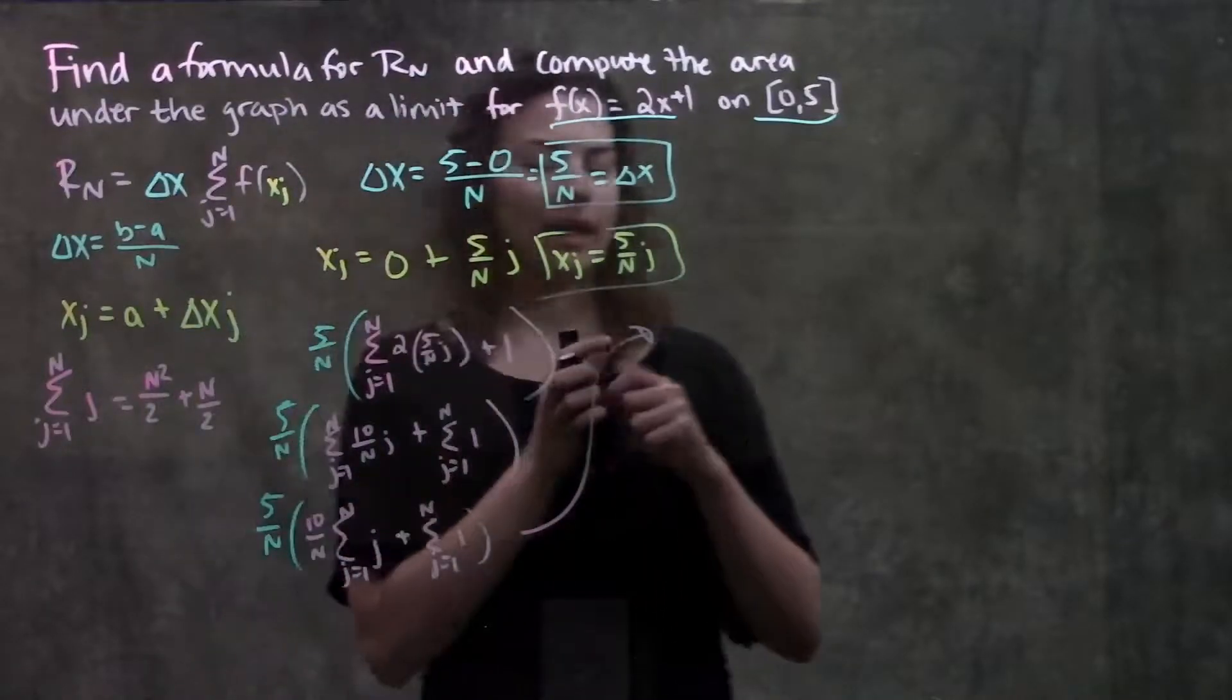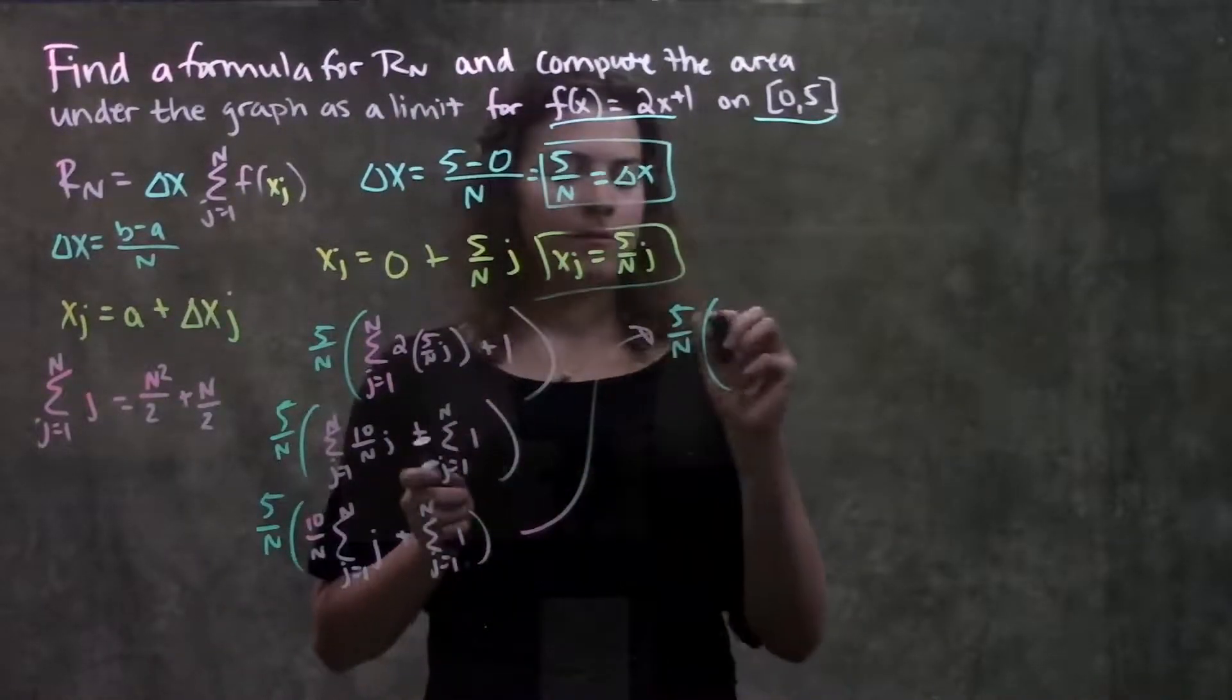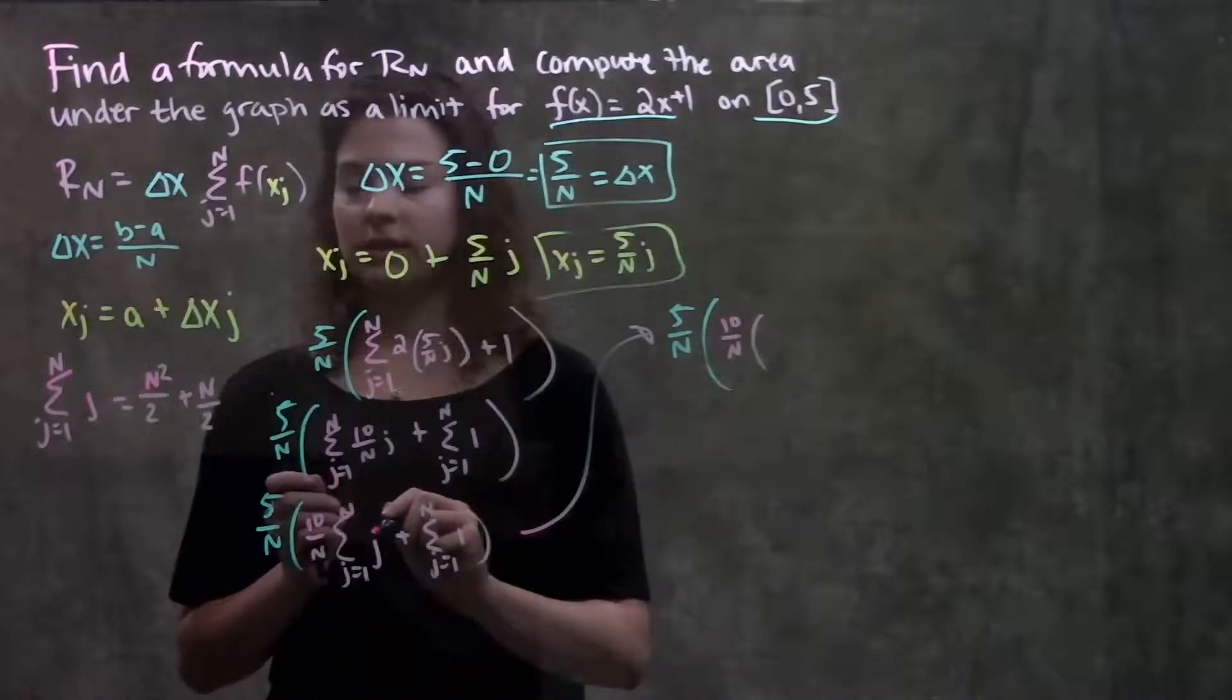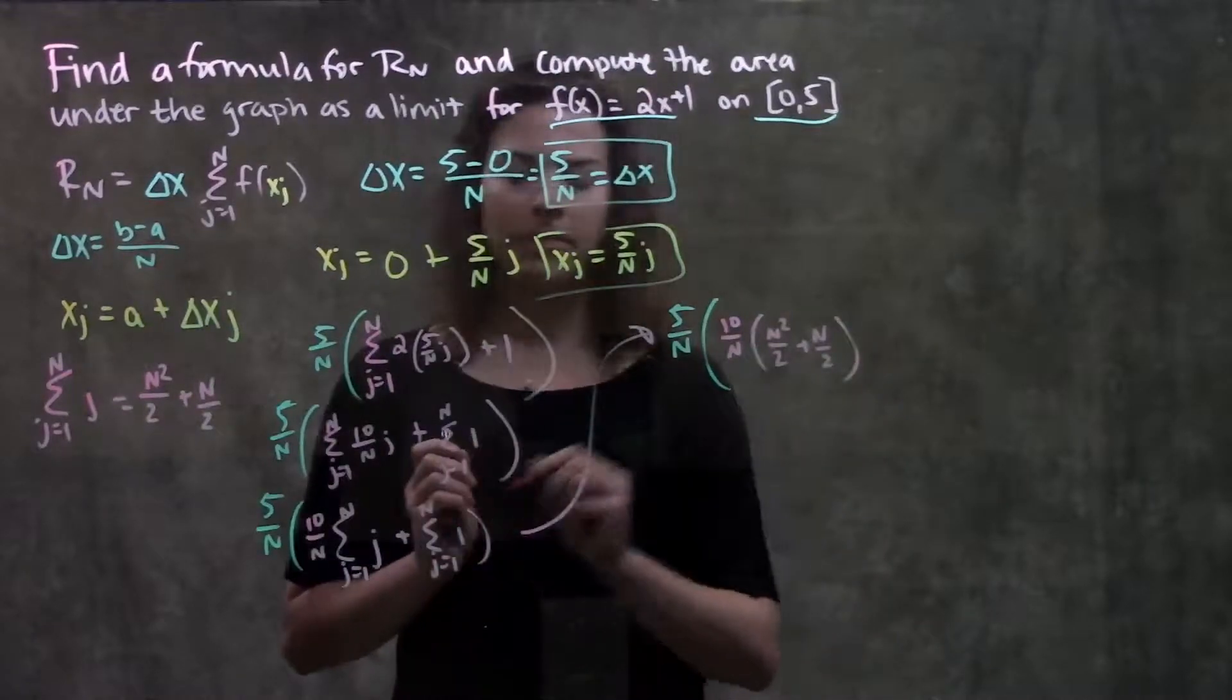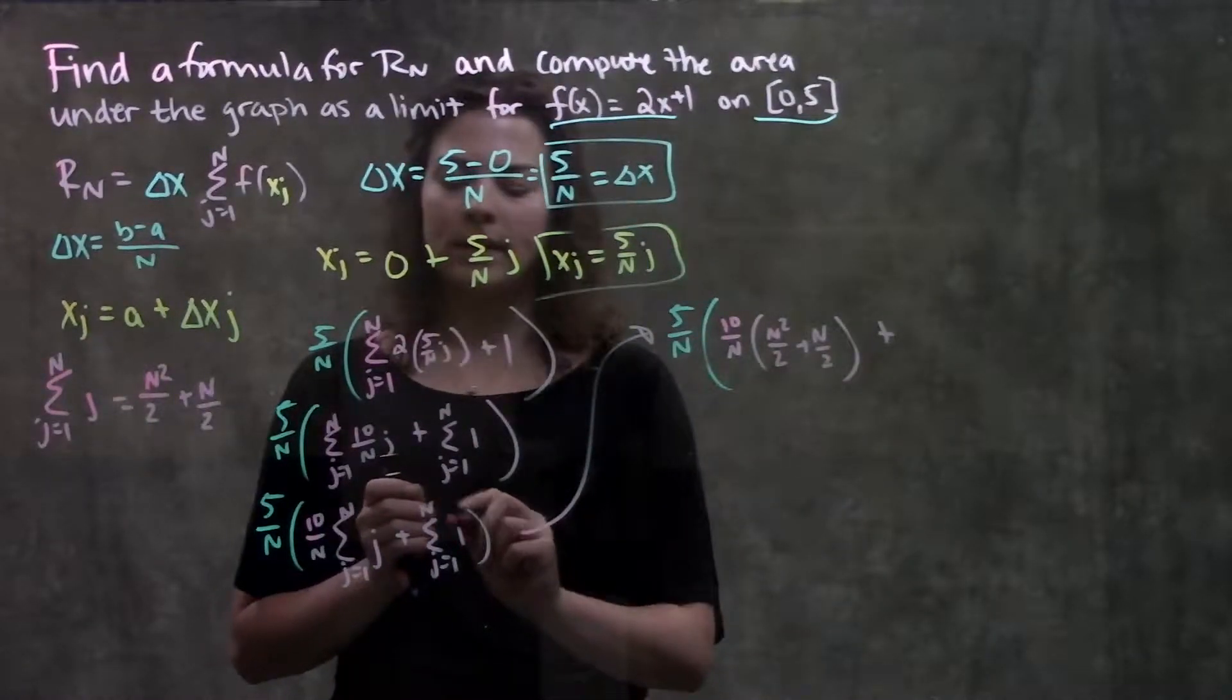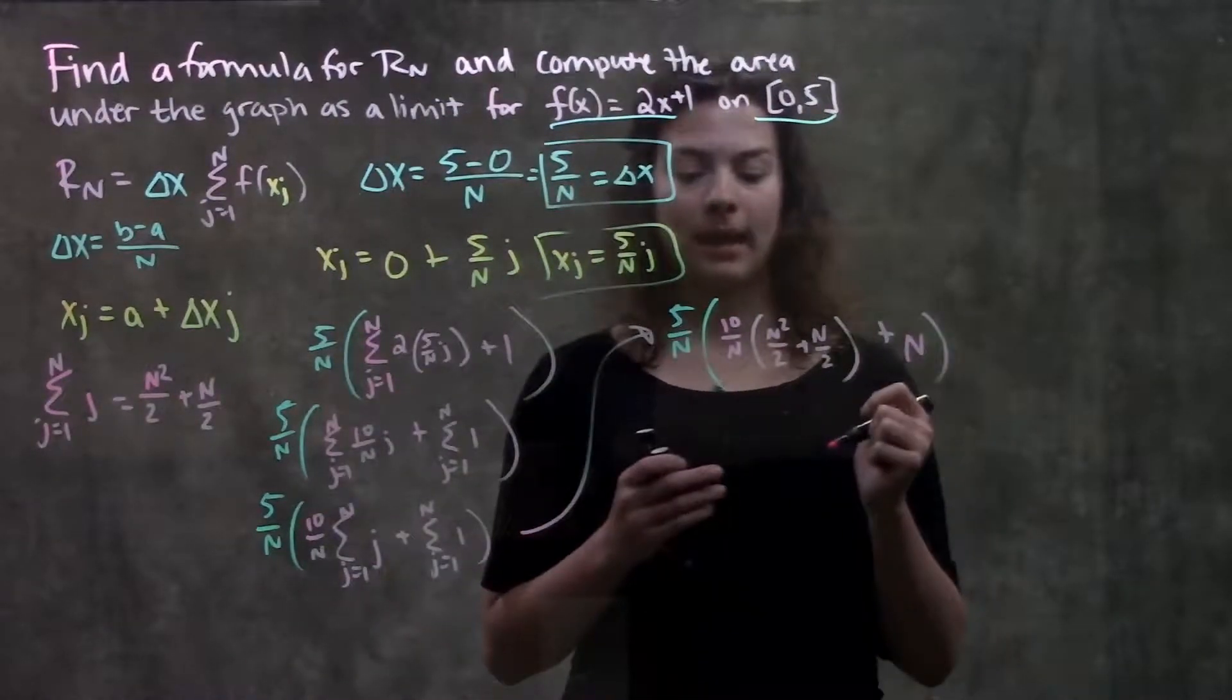So, moving over here. I still have my width, just chilling out here, 5 over n. Now, I have 10 over n, times my formula when I have j, just j in here, becomes n squared over 2, plus n over 2, plus whenever I have a constant here, the summation just becomes 1 times this number up here, which in this case is n. So, 1 times n leaves me with n.